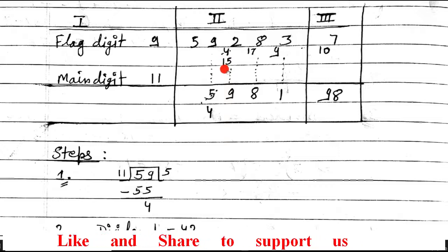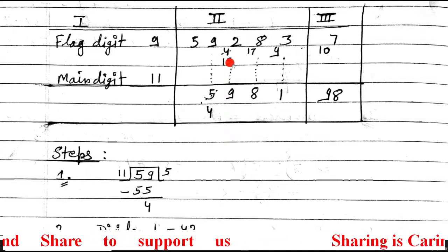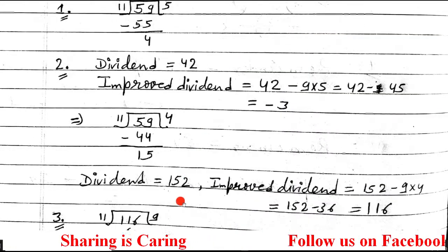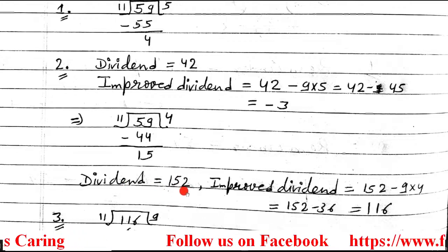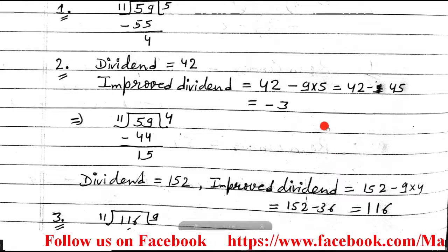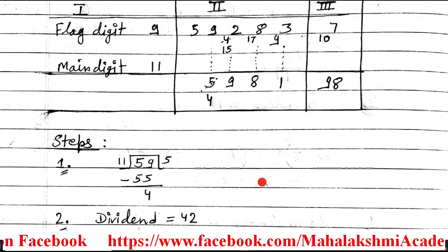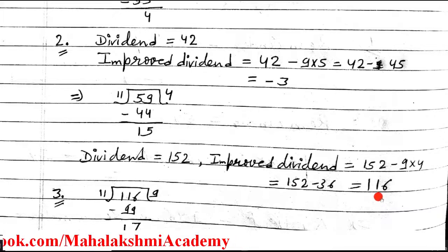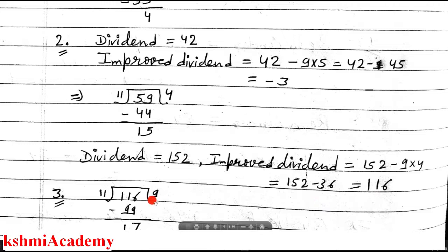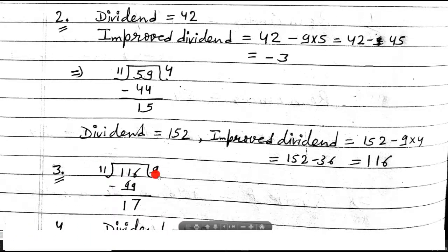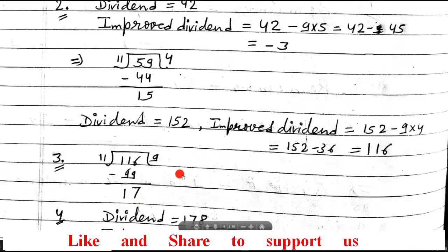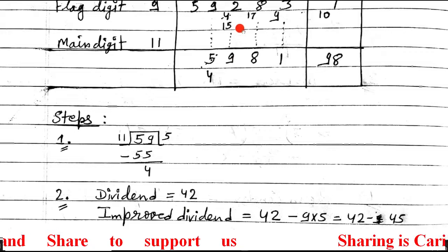Now your dividend is 152. The next improved divider: dividend is 152, and flag digit 9 multiplied by quotient 4 is 36. So 152 minus 36 = 116. Since it is positive, this step is completed. Now divide 116 by 11. 11×9=99, subtract to get remainder 17. Enter quotient 9 and remainder 17 in the table.